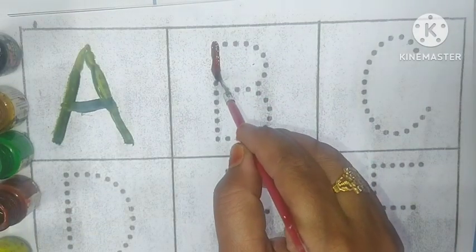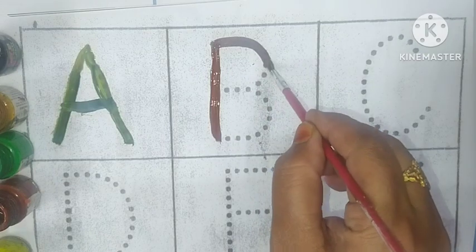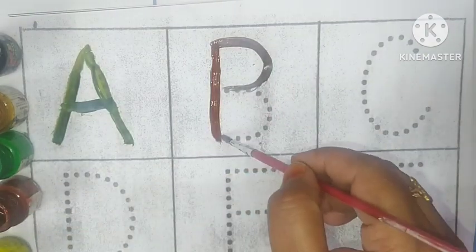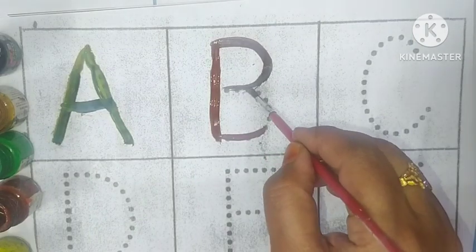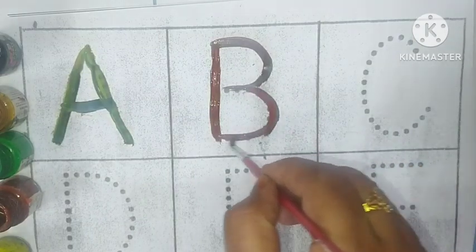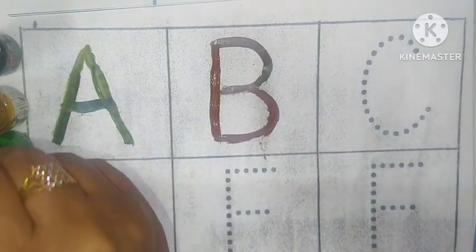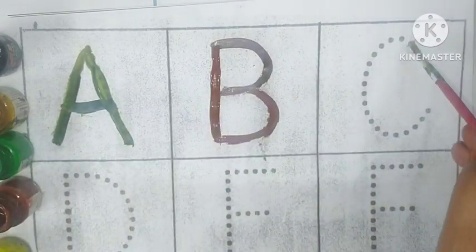Brown Colors. B for Banana. B for Banana, Banana means Kela. B for Banana, Banana means Kela. Peach Color.